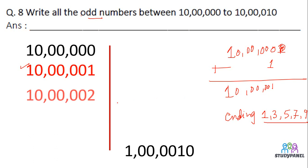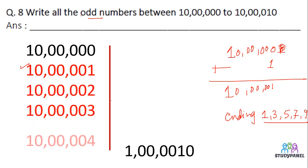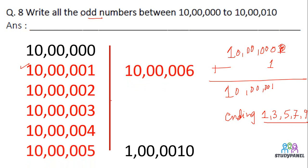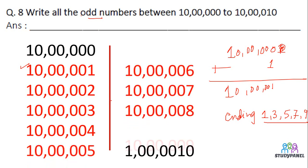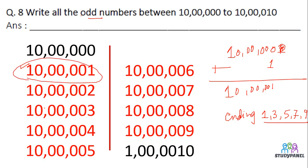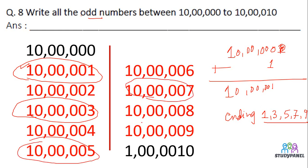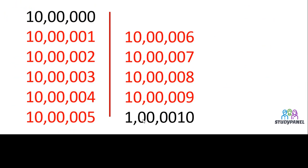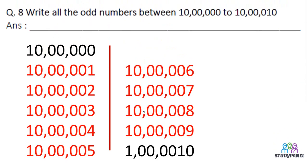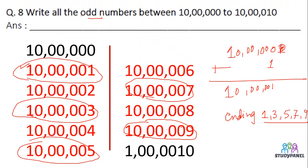Let's see: 1, 2, 3, 4, 5, 6, 7, 8, 9. The odd numbers are: 1 is odd, 3 is odd, 5 is odd, 7 is odd, and 9 is odd. These are all the odd numbers in the given range. So we have 5 odd numbers as our answers.